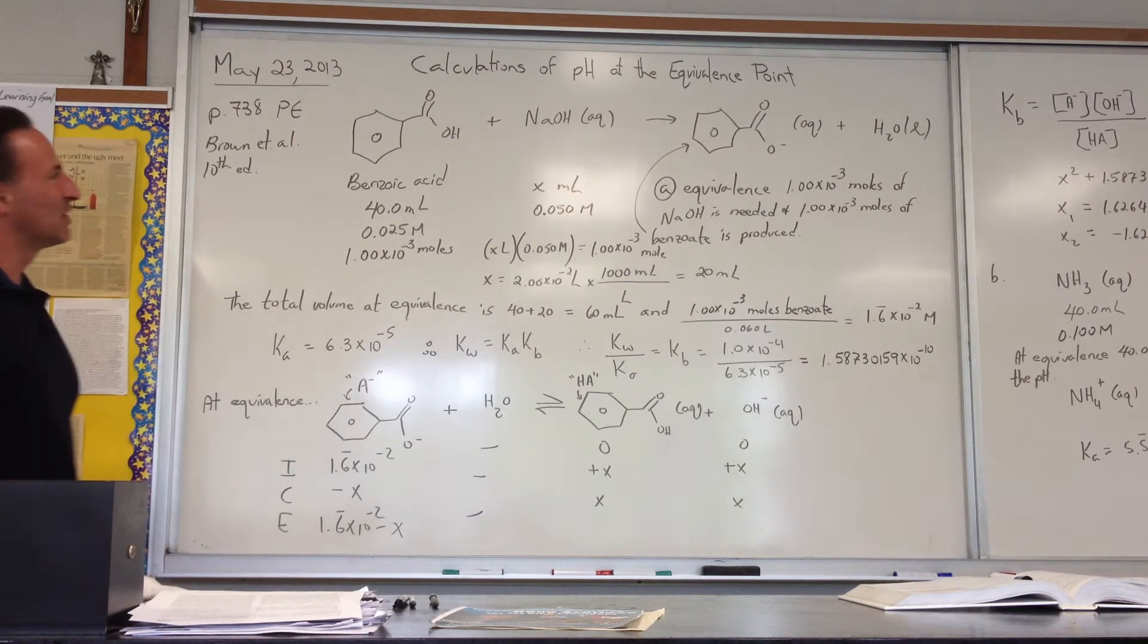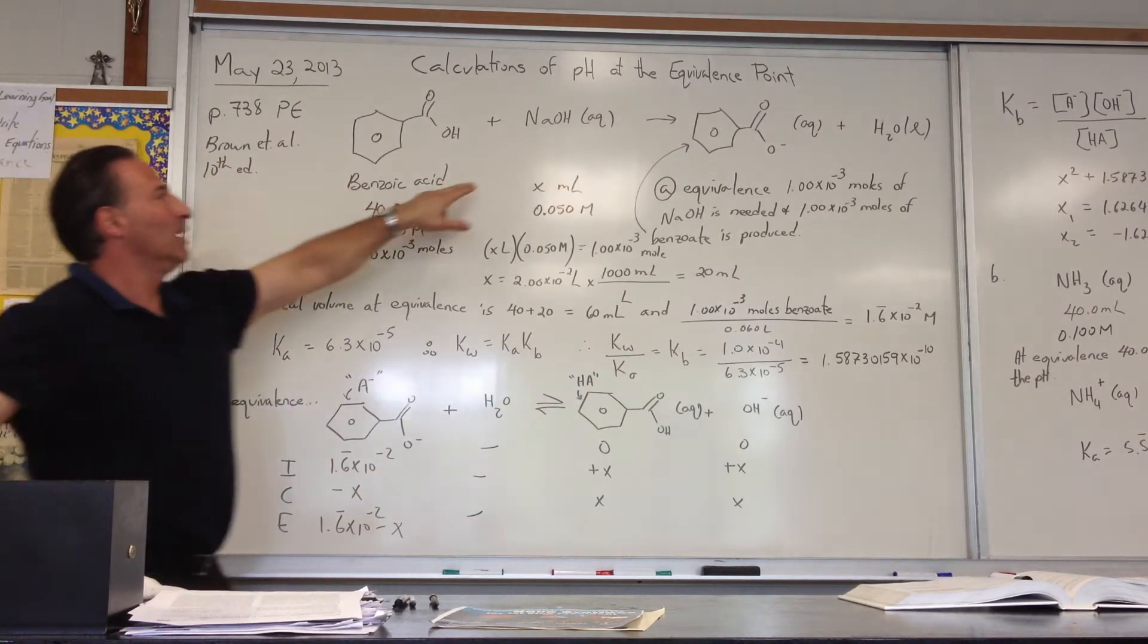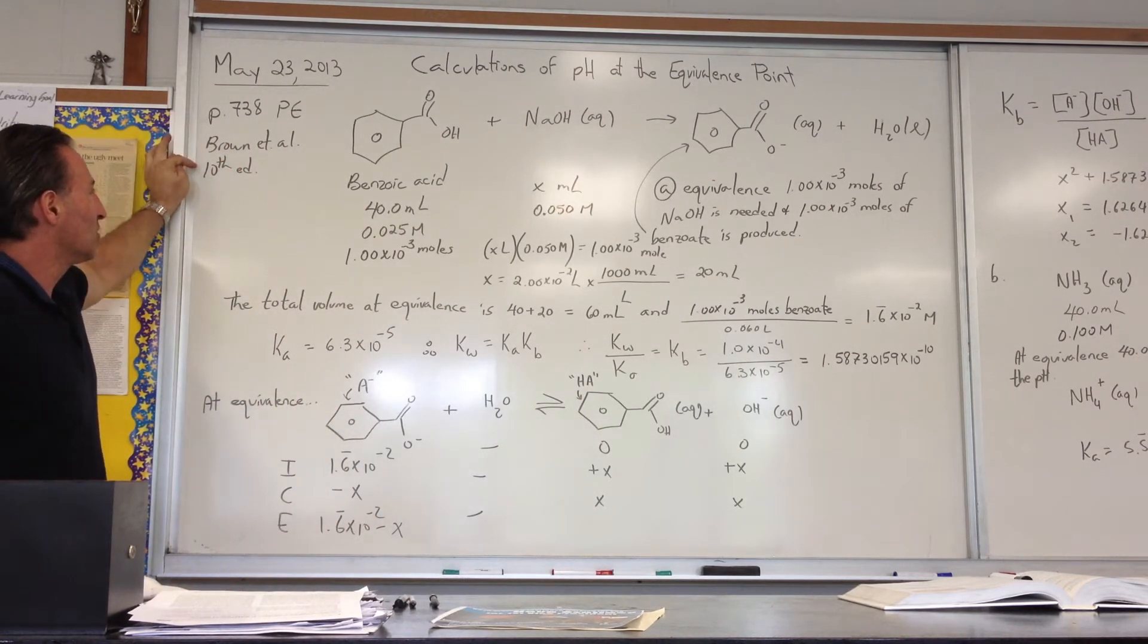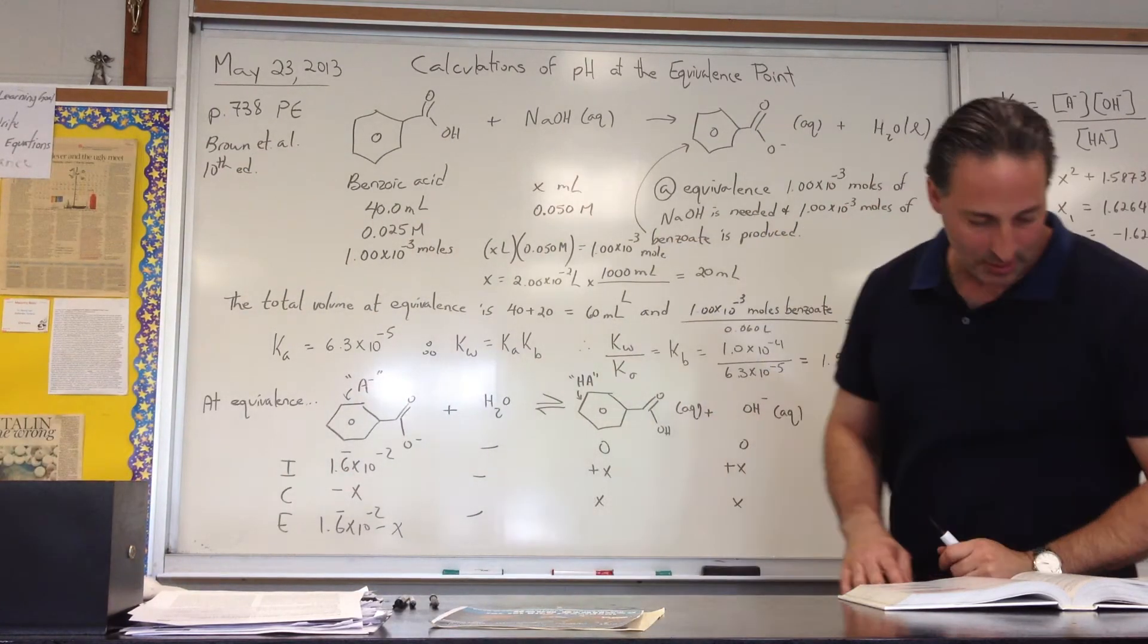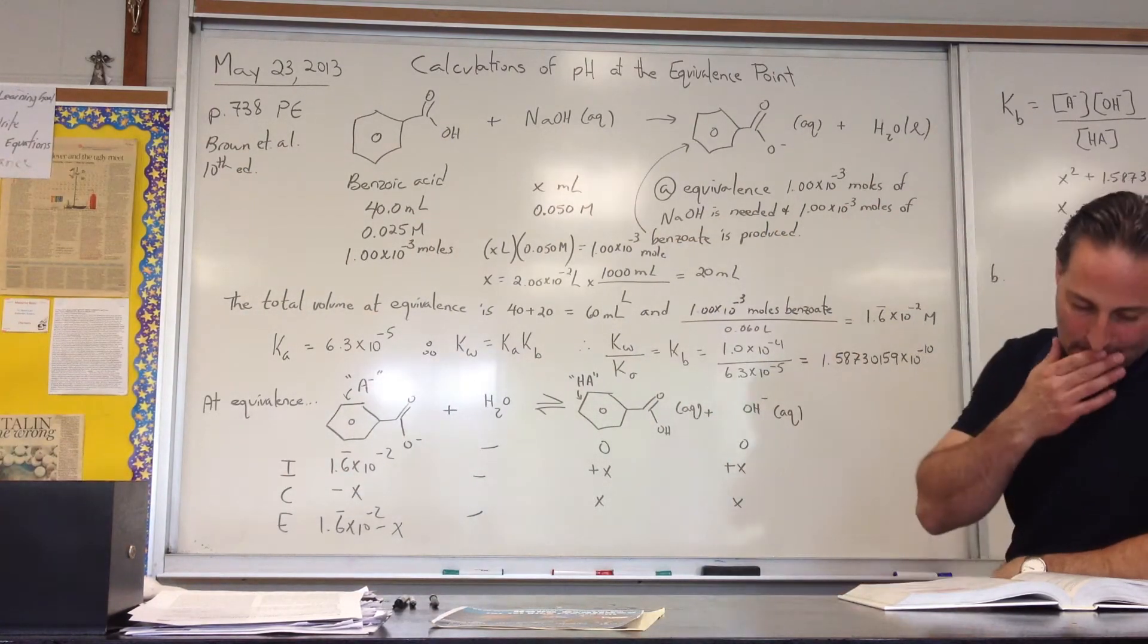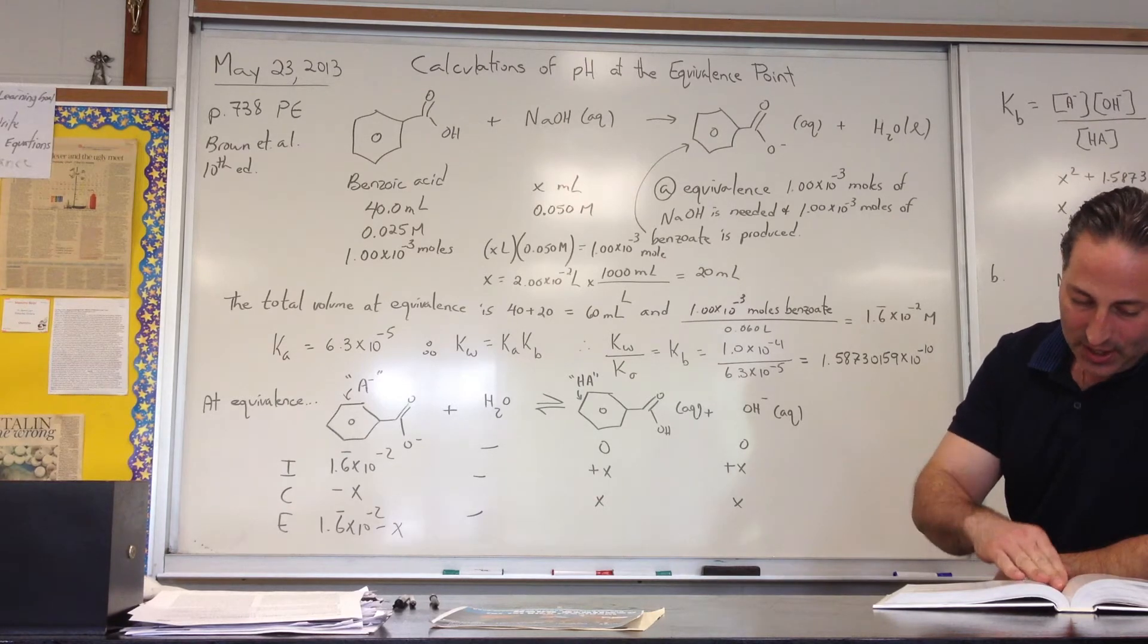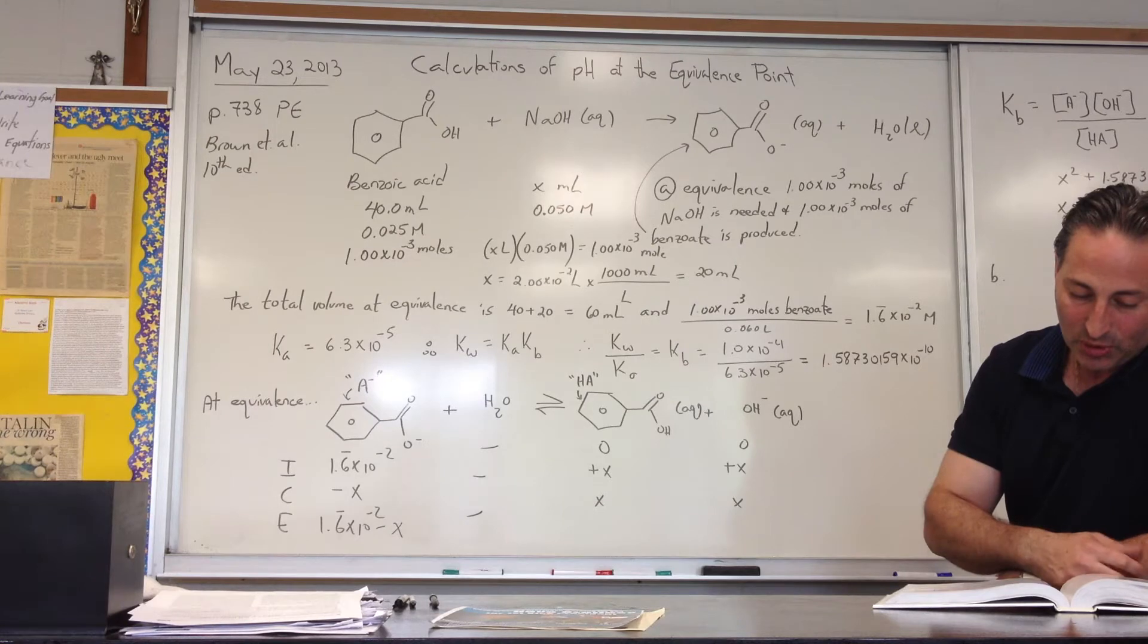Okay, we have a question that deals with the calculation of pH at the equivalence point, a titration between weak acid, which is benzoic acid here, and sodium hydroxide. This comes from our textbook, K7R Brown and others, 10th edition. I'll read you the question. It says, calculate the pH at the equivalence point when 40 mL of 0.025 molar benzoic acid with a Ka of 6.3 times 10 to the minus 5 is titrated with 0.05 molar sodium hydroxide.